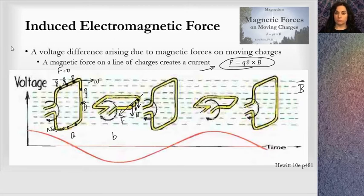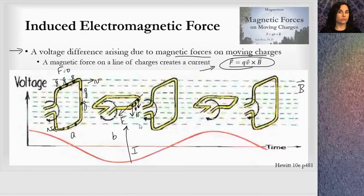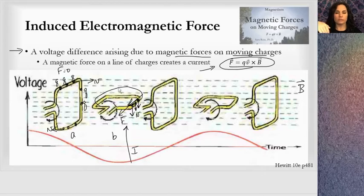A voltage difference arises due to magnetic forces on moving charges. These charges are not moving because of a current — they're moving because of the rotating loop, and that's the velocity vector. Because the loop causes the charges to move in the magnetic field, they're going to feel a force. When a bunch of charges in a row feel that force and they're in a conductor and free to move, they will move and that causes a current in that direction.